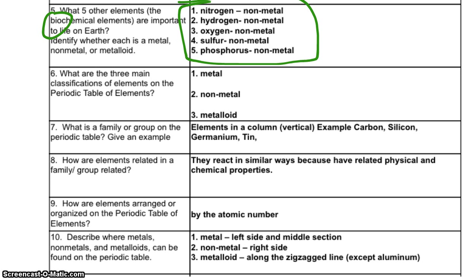Number 6. What are the three main classifications of elements on the periodic table of elements? Well, it's pretty simple. We've got metals, non-metals, and metalloids. Number 7. What is a family or group on the periodic table? Give an example. Remember guys, our families or our groups go up and down or vertical. Elements in a column, vertical. For example, carbon, silicon, germanium, tin. Those are our family up and down columns on the periodic table.